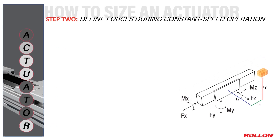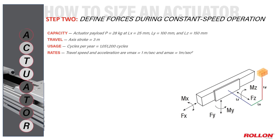The second step in sizing an actuator is to define forces during regular constant speed operation. For this, we'll be using our capacity, travel, usage, and speed values to calculate forces in the X, Y, and Z directions, as well as moments around the X and Z axis.